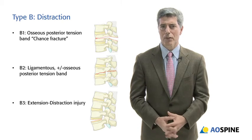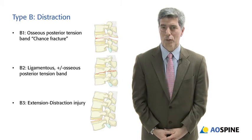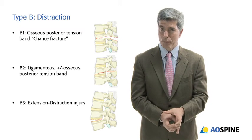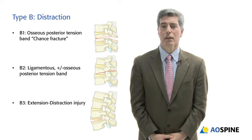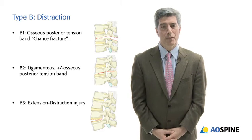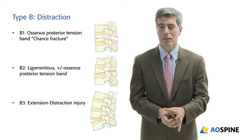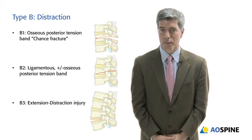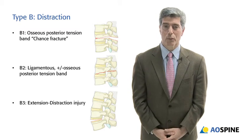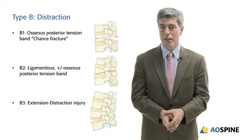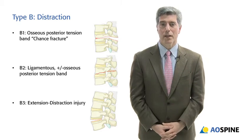You could have a B1 fracture where it's a distraction through bone alone but the ligamentous complex is not disrupted. You could have an injury where you have bony and ligamentous, or all ligamentous — that would be a B2, and that's much more unstable. Or you could have a distraction extension injury, which is B3, which we often see in the setting of DISH — diffuse idiopathic skeletal hyperostosis — or ankylosing spondylitis.